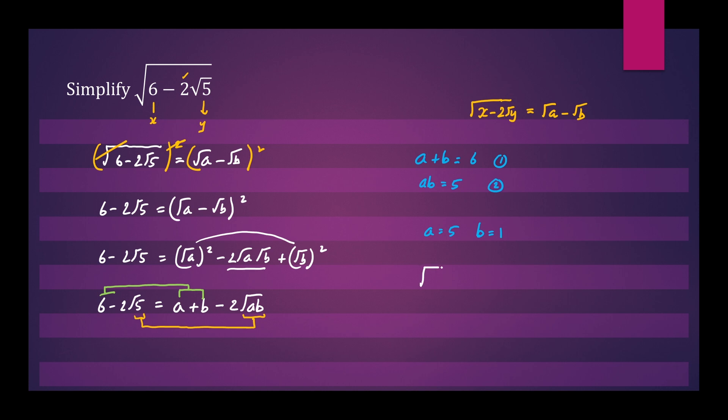So we can write down the square root of 6 minus 2 root 5 equals root 5 minus root 1, which can be simplified to root 5 minus 1. This is your final answer.